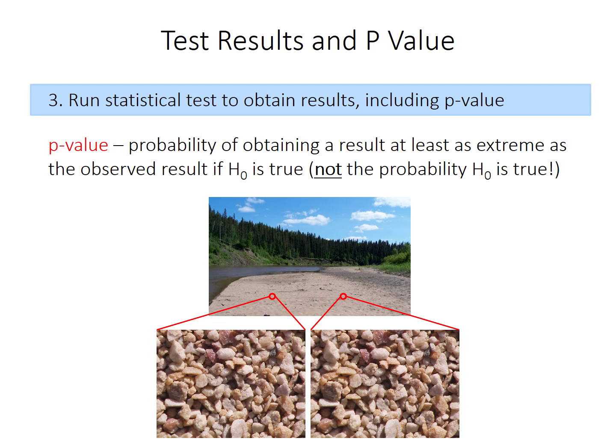So one of the outputs from a statistical test is called the p-value. And the p-value is what I mentioned on the previous slide. Now we're just defining it. It's basically the probability of obtaining a result at least as extreme as the observed result if the null hypothesis is true. So the p-value is an important part of the decision process in this type of statistical hypothesis testing.